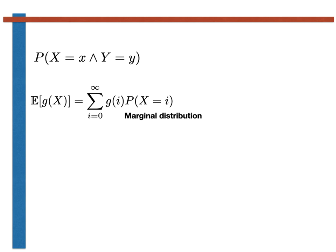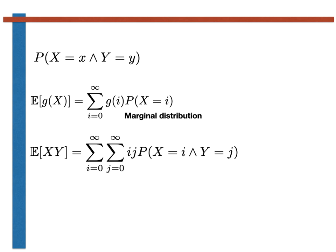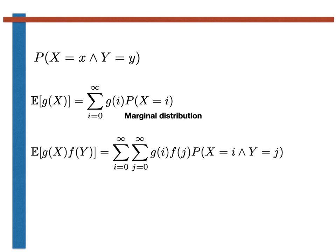If we are given a joint probability mass function, we can also calculate the expectation of a product of two random variables using the expression involving the double sum shown here. Taking this further, we can even calculate the expectation of the product of two functions of the random variables using the expression shown here.